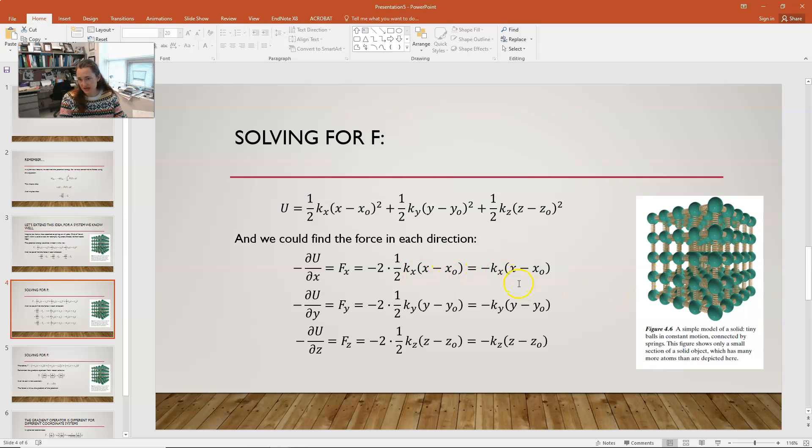Simplifying, I get minus kx times x minus x naught. And then, of course, I would get the exact same thing, kind of, second verse, same as the first, repeated for the y and the z components. So, my force in the y direction would be minus ky times y minus y naught. And my force in the z would be minus kz times z minus z naught. So, that's our Hooke's Law equation back again.